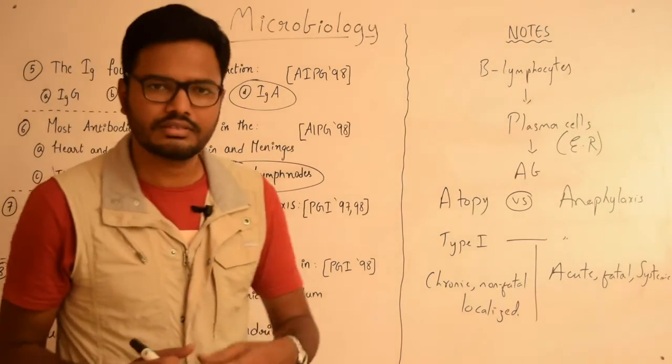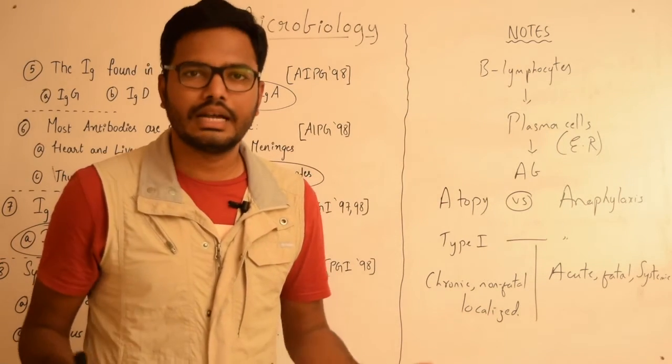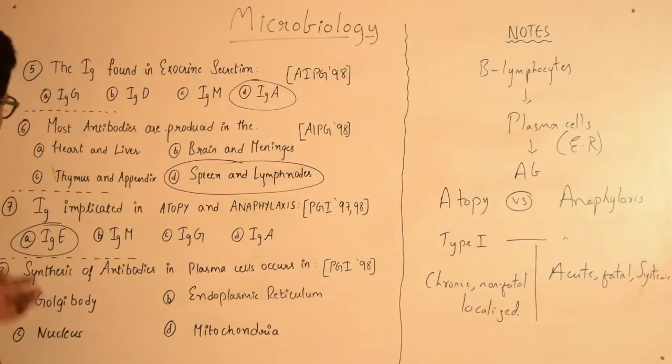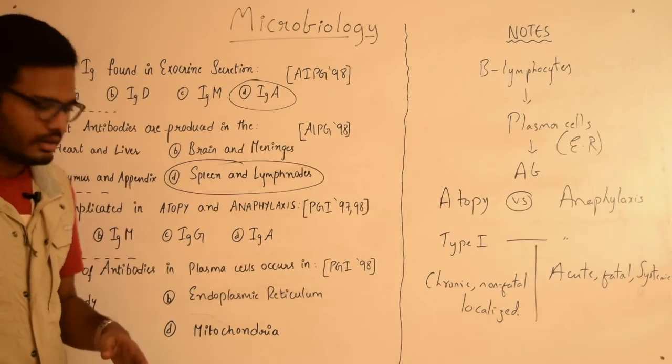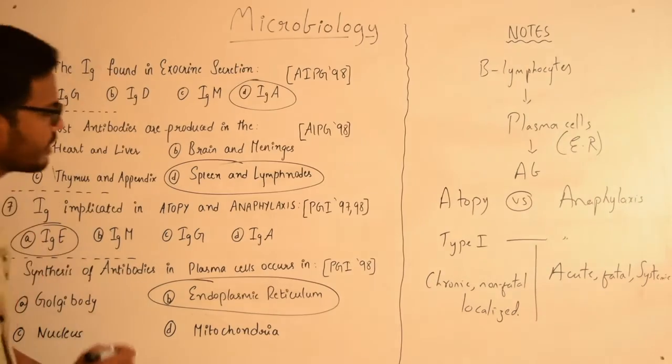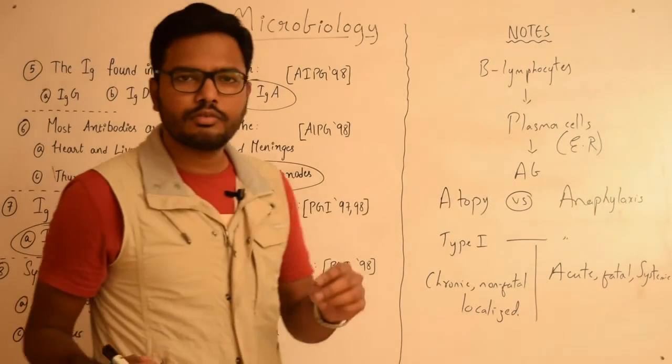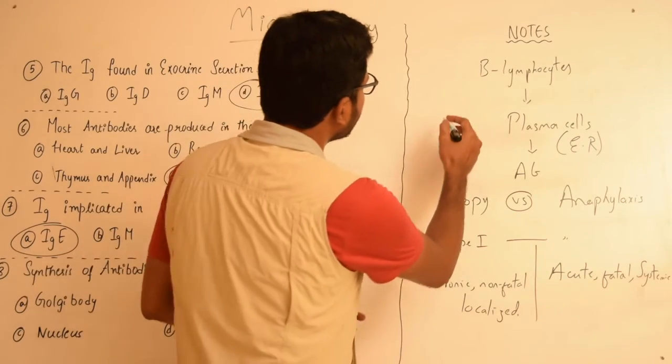IgE is implicated in atopy and anaphylaxis, various allergic reactions or manifestations such as hay fever, eczema, and asthma. Now moving on to the next question: synthesis of various antibodies in plasma cells occurs in? I have been repeatedly discussing this—it's endoplasmic reticulum. To discuss a few aspects about plasma cells: plasma cells are usually oval in shape.